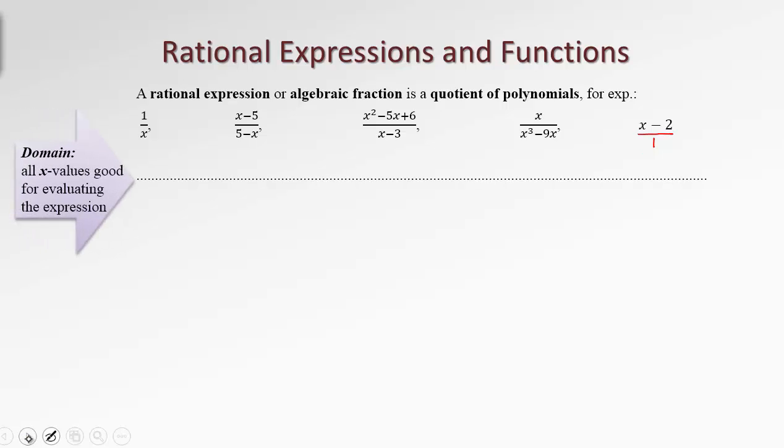When we deal with rational expressions, we'll be interested in those special values that will not allow us to evaluate the expression. For example, we can't evaluate the reciprocal of x when x is zero. So we will be interested in finding the domain of the rational expression. Let's recall that the domain is the set of all x values that will be good for evaluating the expression. All real numbers except for the one that will make the denominator zero. So in this case zero has to be excluded, because if we have x equals zero, we have expression one over zero that doesn't produce any value.